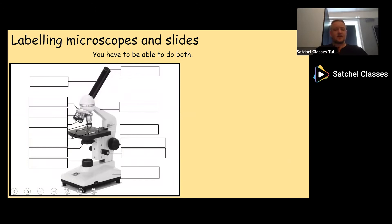So let's take a look at our first objective. First off, you need to be able to label microscopes and slides. You have to be able to do both. What we've got here is a picture of what you probably find in most labs, a standard microscope setup.